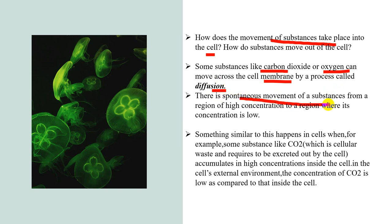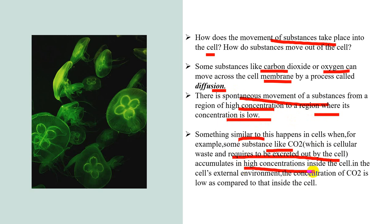Diffusion is the spontaneous movement of a substance from a region of higher concentration to a region where its concentration is low. For example, CO2 is a cellular waste that needs to be excreted. It accumulates in higher concentration inside the cell. Comparatively, the concentration of CO2 outside the cell is lower.